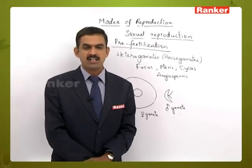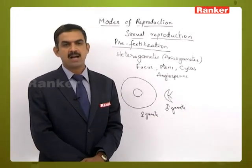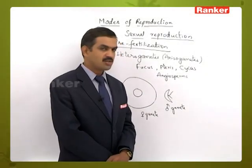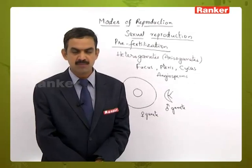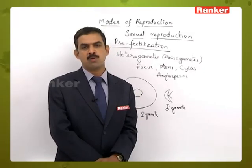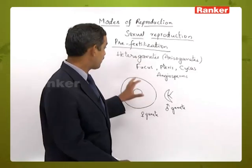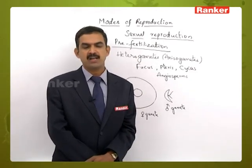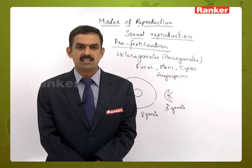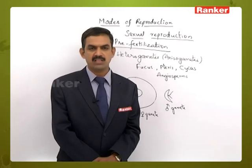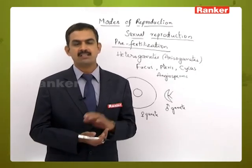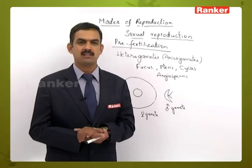In lower organisms — algae, fungi, bryophyta, and pteridophytes — the male gametes are motile and female gametes are non-motile. These motile male gametes have locomotory structures such as flagella or cilia; they swim in water to reach the female reproductive structures to participate in fertilization. In higher plants, that is gymnosperms and angiosperms, both the male and female gametes are non-motile but structurally different, so heterogametic condition is still observed, but the male gametes are non-motile in nature.